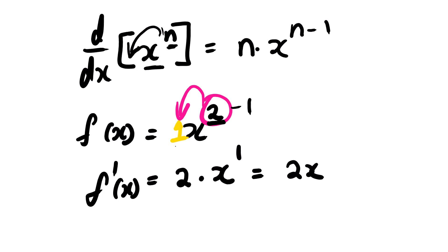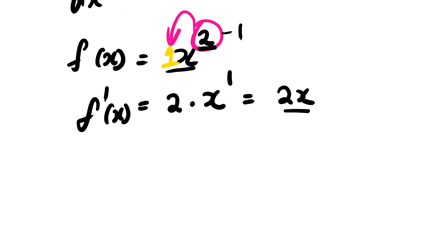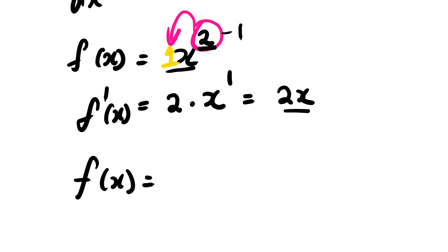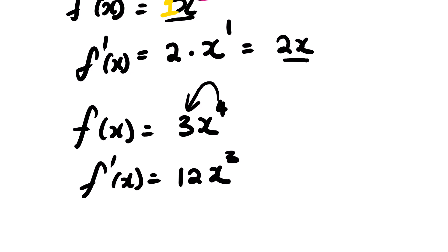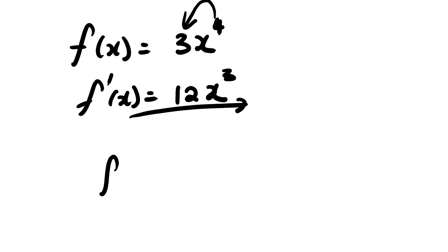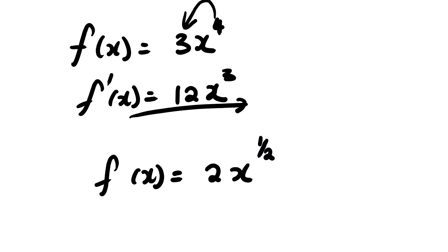So the derivative of x² is 2x. Let's look at another example: the derivative of 3x to the power 4. The derivative is 4 multiplied by 3, which is 12, times x to the power 4 minus 1, which is x³. So the derivative of 3x⁴ is 12x³.